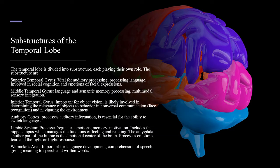The temporal lobe is divided into substructures, each playing their own role. The superior temporal gyrus is vital for auditory processing, processing language, and is involved in social cognition and emotions of facial expressions. The middle temporal gyrus handles language and somatic memory processing, as well as multi-modal sensory integration. The inferior temporal gyrus is important for object vision, is likely involved in determining the relevance of objects to behavior and non-verbal communication, face recognition, and navigating the environment.